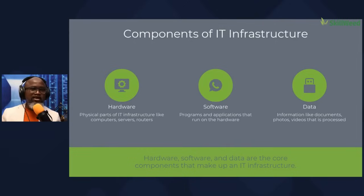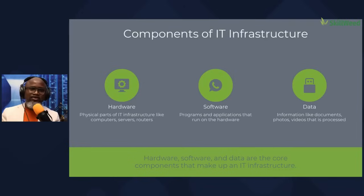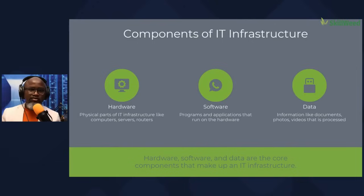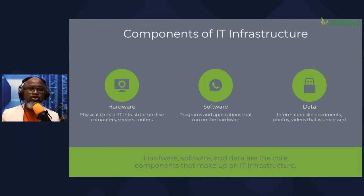IT infrastructure is just the combination of all of these elements. Hardware — we are talking about the physical part of IT: your computer, your servers, your phone, your wearable devices — all of these are considered hardware. Software will be programs and applications that run on that hardware, like WhatsApp or a banking application. Then data — these are the information we share, like our documents, our family pictures, our videos — all of those are considered part of the data.